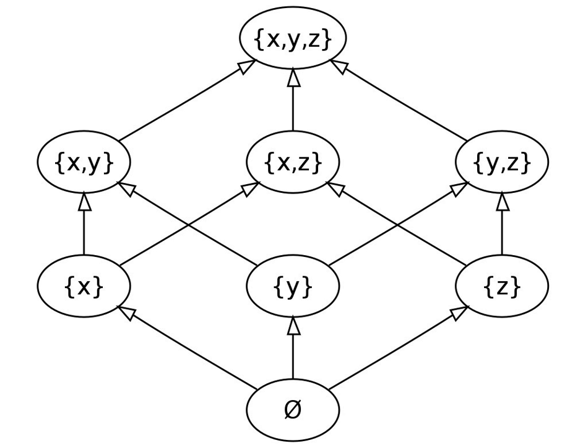A set can be regarded as an algebra having no nontrivial operations or defining equations. From this perspective, the idea of the power set of X as the set of subsets of X generalizes naturally to the subalgebras of an algebraic structure or algebra. Now the power set of a set, when ordered by inclusion, is always a complete atomic Boolean algebra, and every complete atomic Boolean algebra arises as the lattice of all subsets of some set. The generalization to arbitrary algebras is that the set of subalgebras of an algebra, again ordered by inclusion, is always an algebraic lattice, and every algebraic lattice arises as the lattice of subalgebras of some algebra. So in that regard subalgebras behave analogously to subsets.